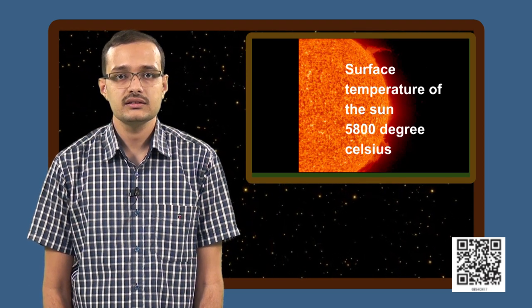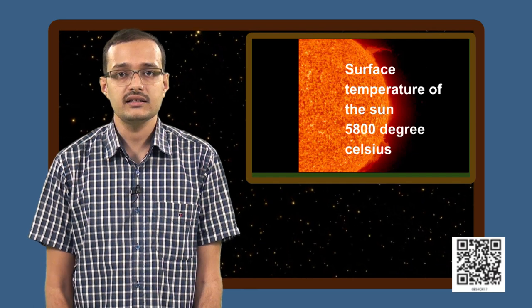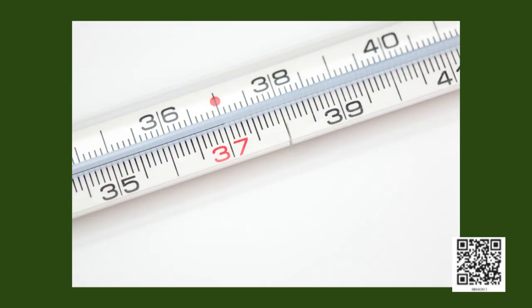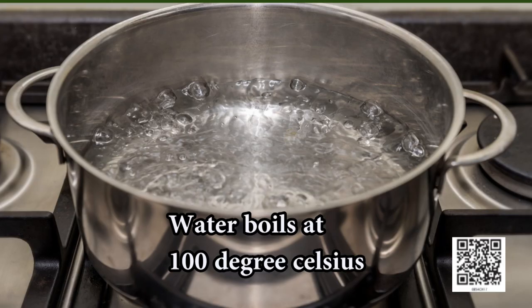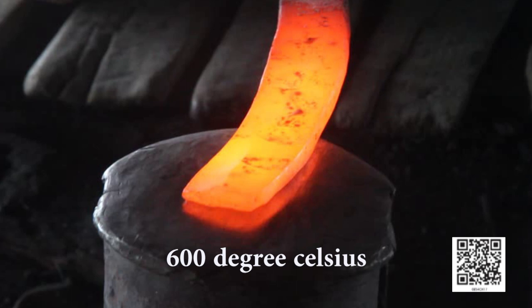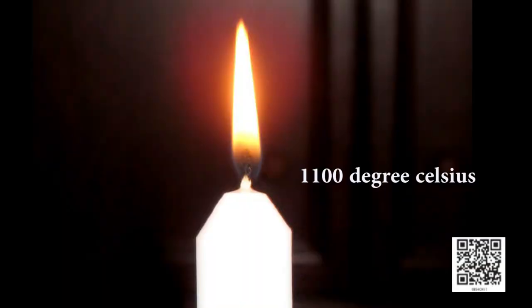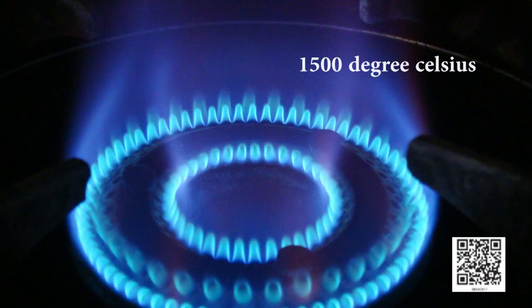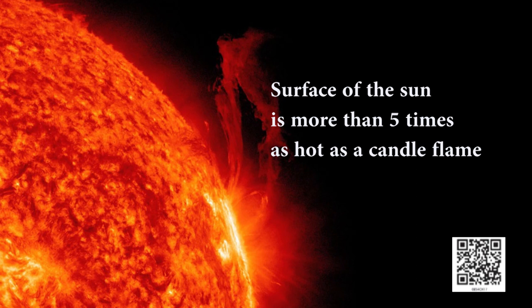Do you know how hot 5,800 degree Celsius is? For comparison, human body temperature is approximately 37 degrees Celsius. Water boils at 100 degrees Celsius. A red hot iron at a blacksmith's workshop is roughly 600 degrees Celsius. The flame of a candle is about 1100 degrees Celsius. The gas stove in your kitchen can produce flames as hot as 1500 degrees Celsius. The surface of the sun is more than 5 times as hot as a candle flame.